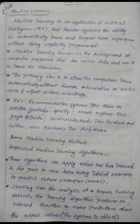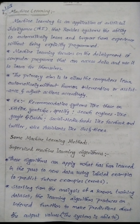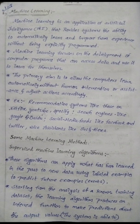Machine learning algorithms learn from experience. We don't have to explicitly program the system. Machine learning focuses on the development of computer programs that can access data and use it to learn for themselves. The primary aim is to allow the computer to learn automatically without human intervention or assistance and adjust actions accordingly.